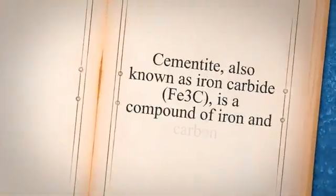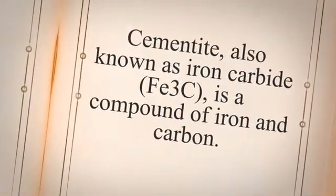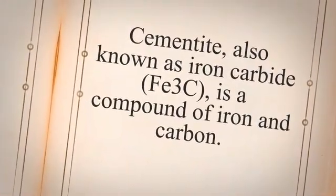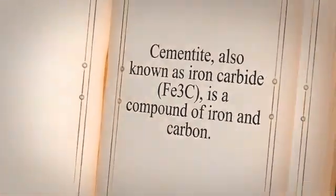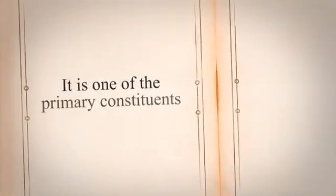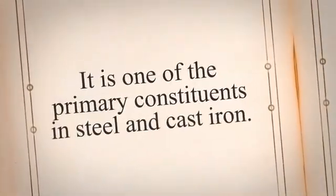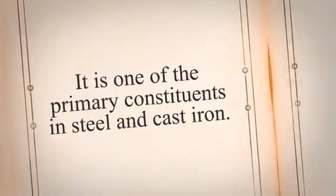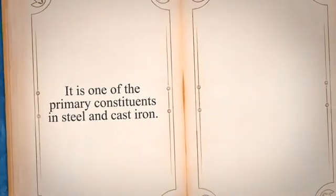Cementite, also known as iron carbide, is a compound of iron and carbon. It is one of the primary constituents in steel and cast iron.